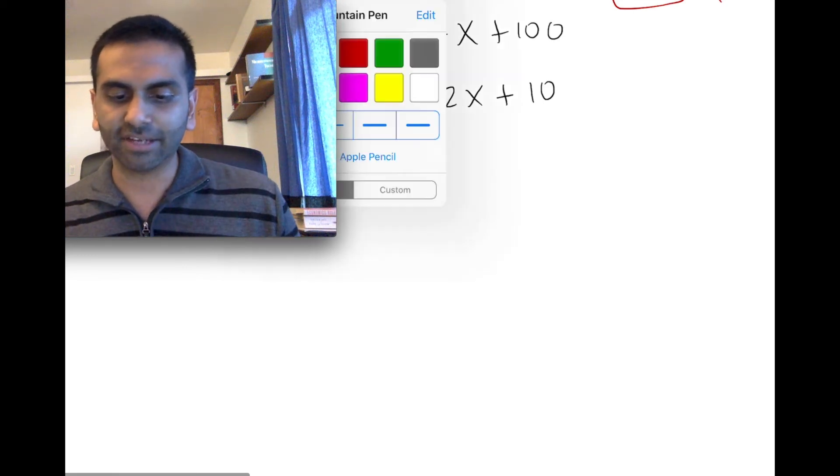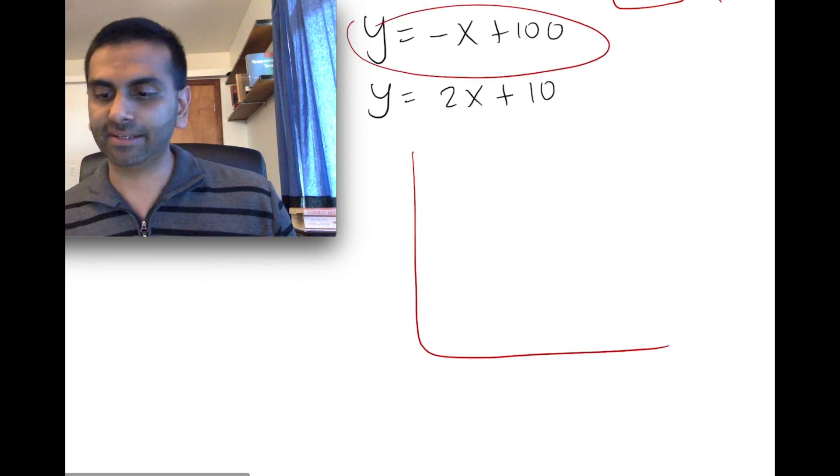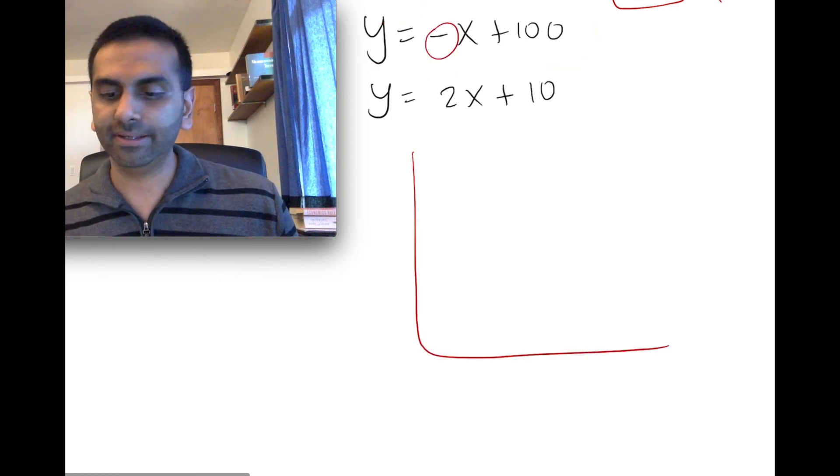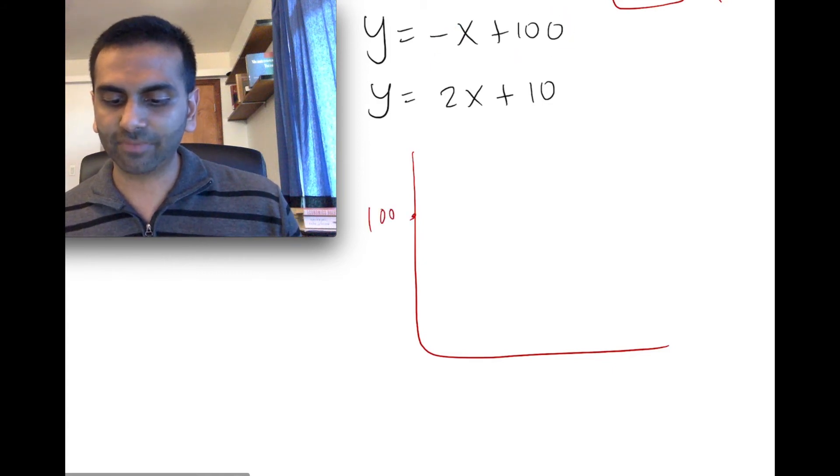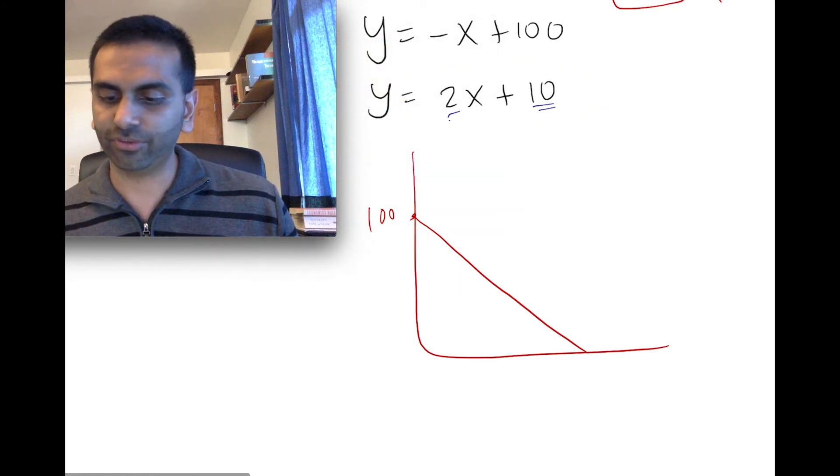And so here's what this looks like. So graphically, let's say this guy, y equals -x + 100. What would that look like? That is a slope of -1 and a y intercept of 100. So that's 100 with a slope of -1. So that's like that. What about this guy? This is a slope and an intercept of 10 and a slope of 2. That's an intercept of 10 and a slope of 2. That's steeper. Like this.